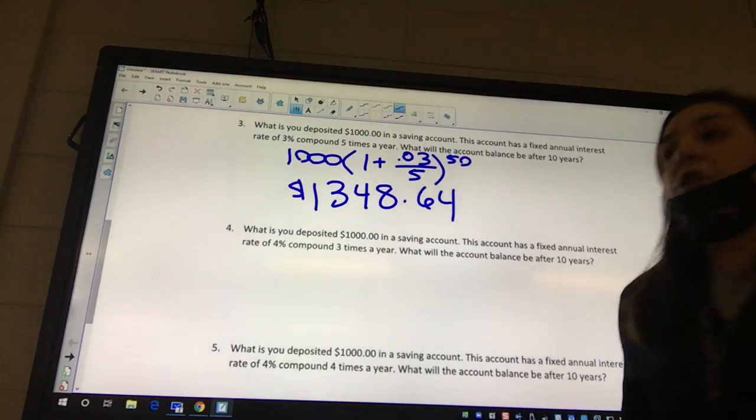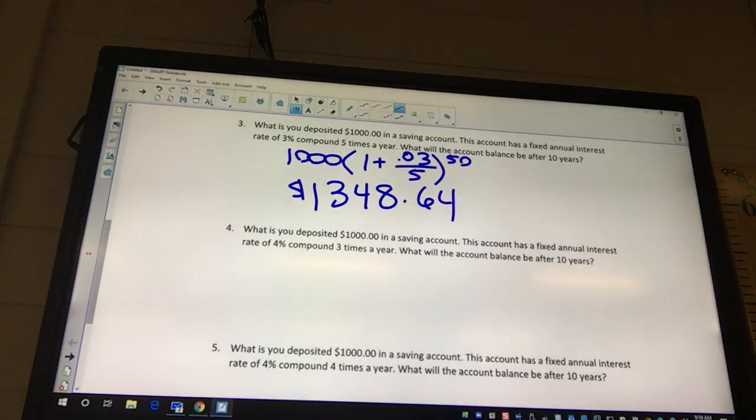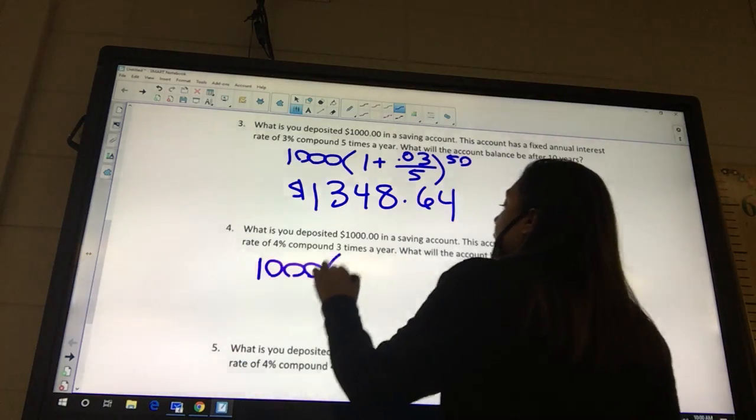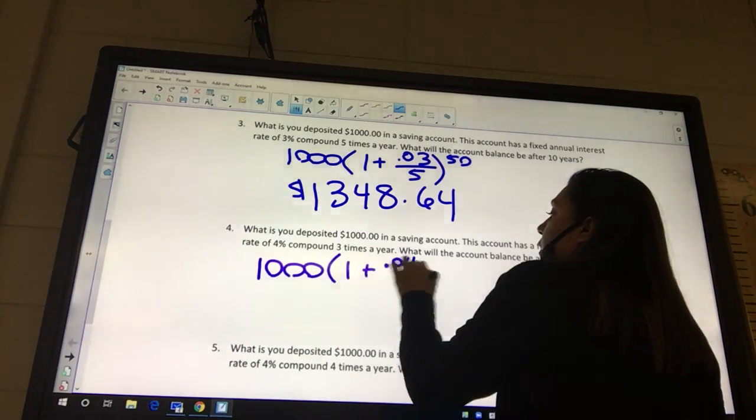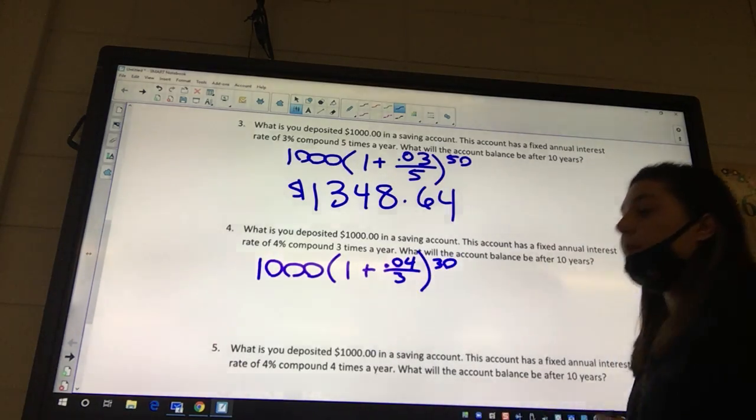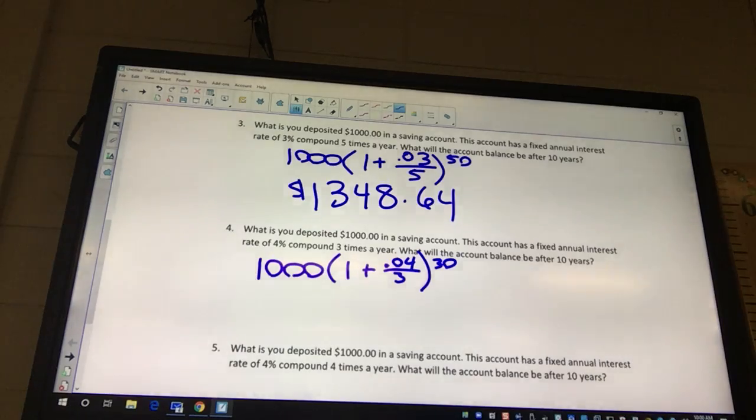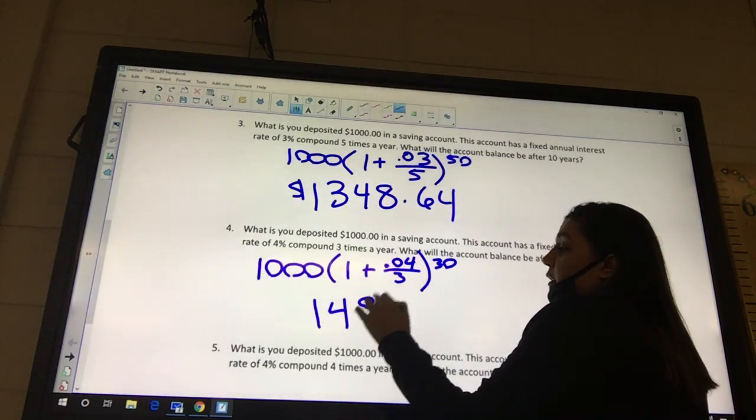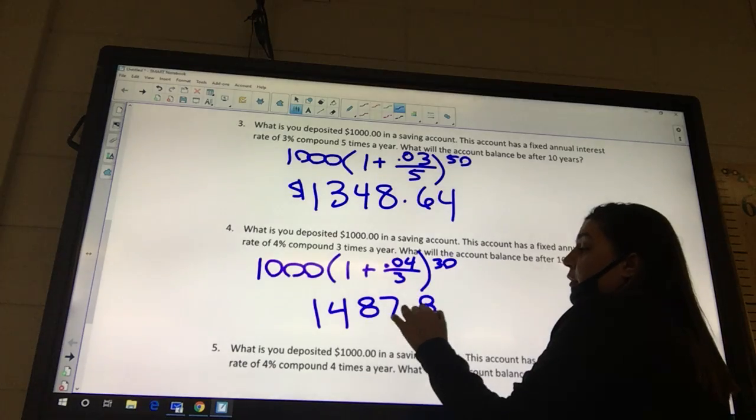So what changed at number 4? The percentage, okay? Their interest rate changed. So now for all their money, they're getting more interest rate. That's money that the bank gives you back. So it's still going to be $1000, 1 plus, and it's going to be .04 over 3. It's still at 10 years, so 30. $1487.88? Okay.